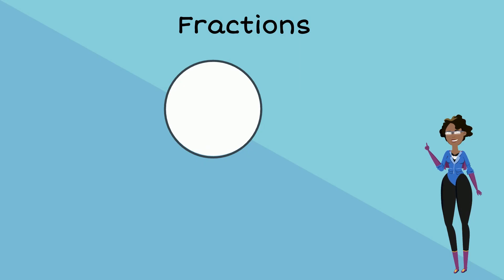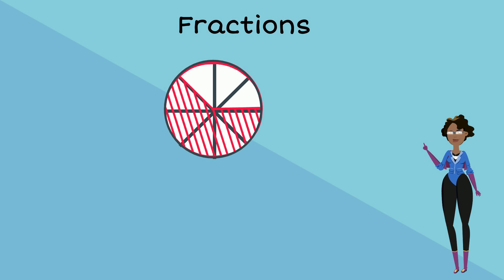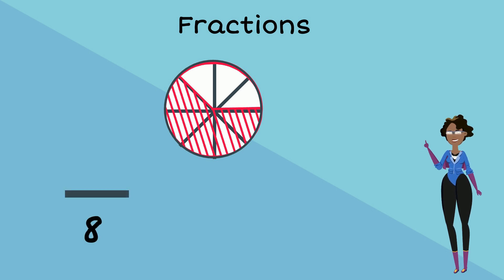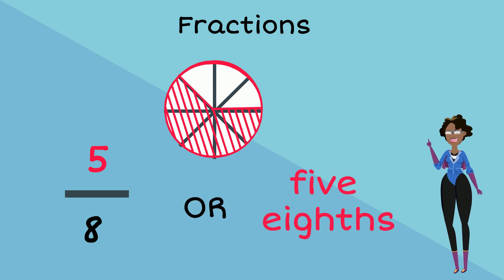A circle is divided into eight equal parts and Ronelle is to select five of the eight parts. The eight equal parts will be our denominator while the five selected parts will be our numerator. The fraction that the five selected parts represents is five out of eight, or five eighths.